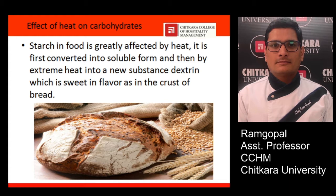Starch is greatly affected by heat. It is first converted into a soluble form, and if you apply extreme heat it turns into a new substance called dextrin, which has a sweetened flavor. You can see this in the crust of breads. This is also related to caramelization and the Maillard reaction — whenever you give intense heat to any sweet product or sugar, it turns into a brownish substance called dextrin. The crust of bread is one of the best examples.